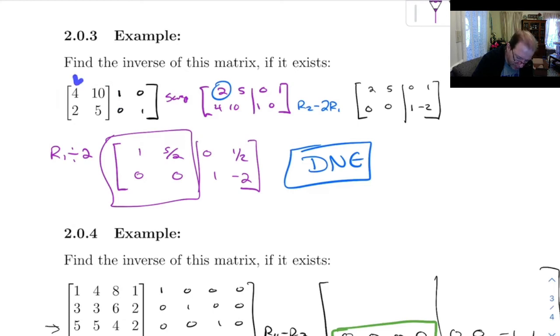This is not as obvious, but one column is also a multiple of the other. If you take 4 and multiply it by 10 over 4, 5 halves, you get 10. And if you multiply 2 by 5 halves, you get 5.